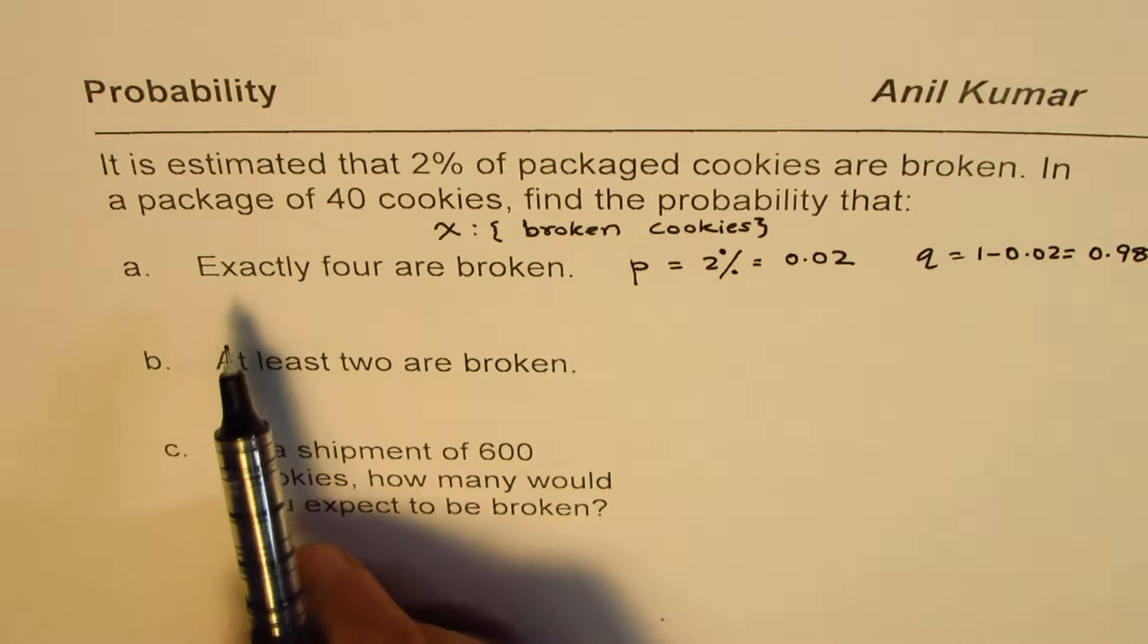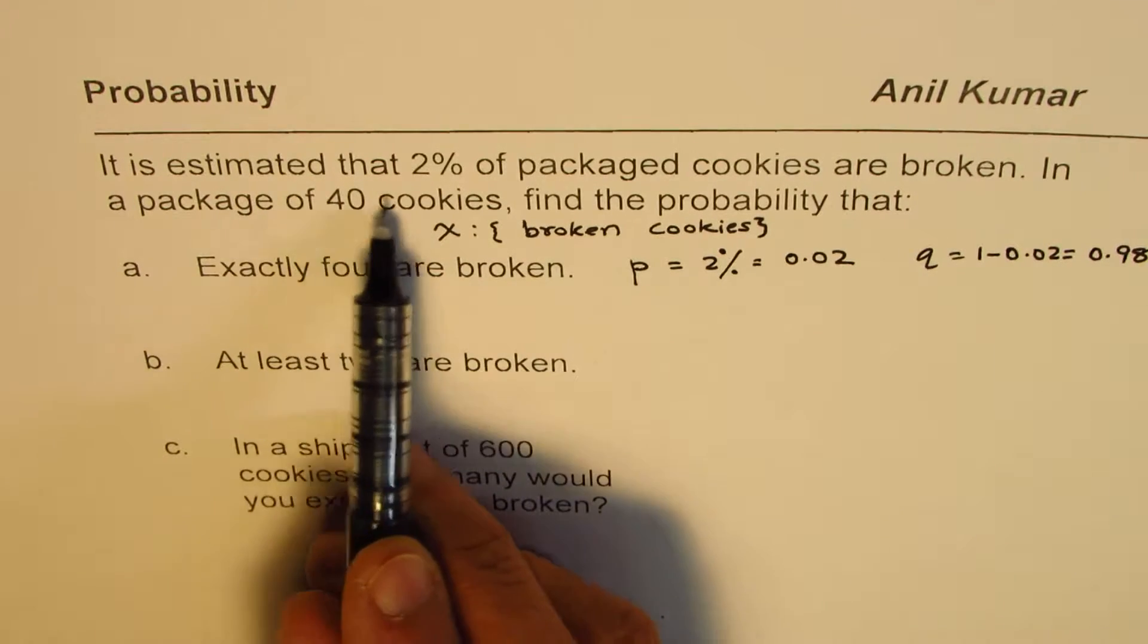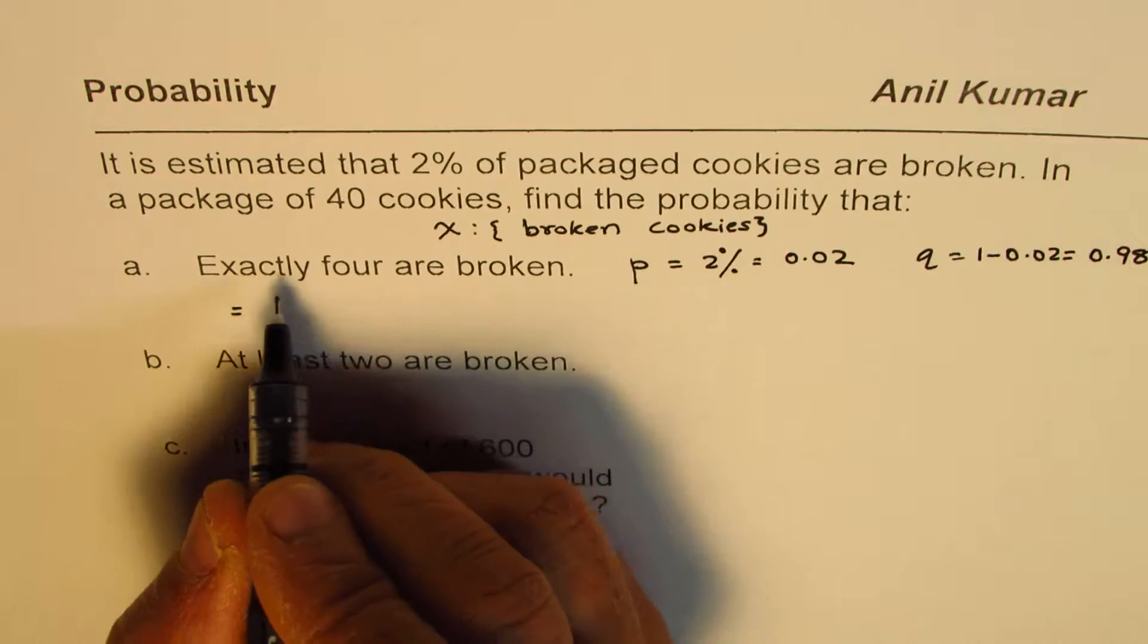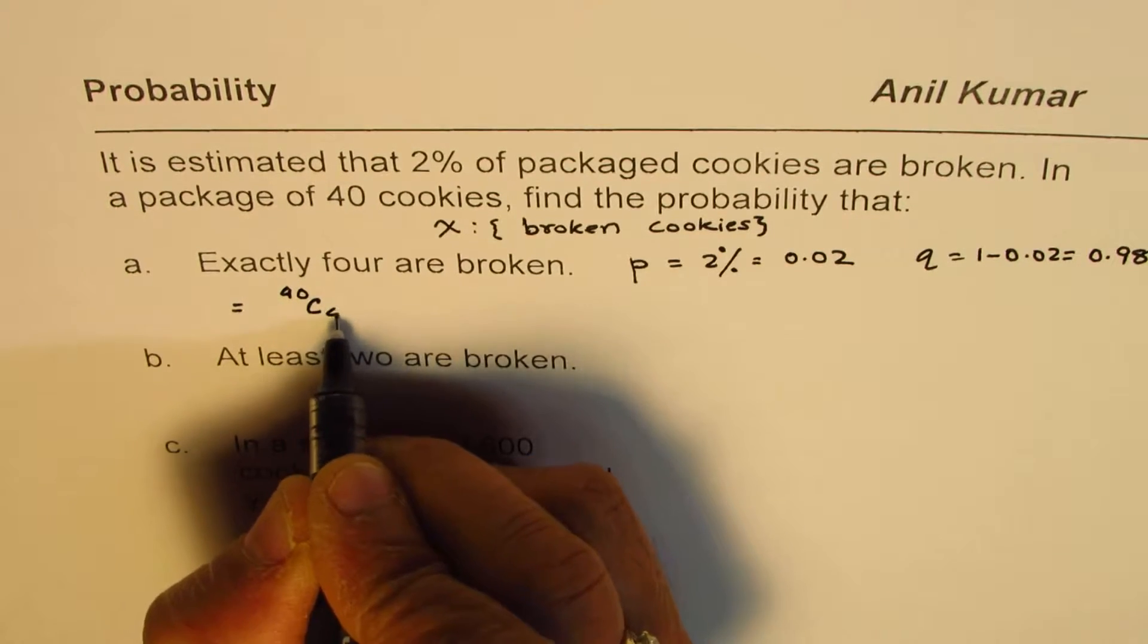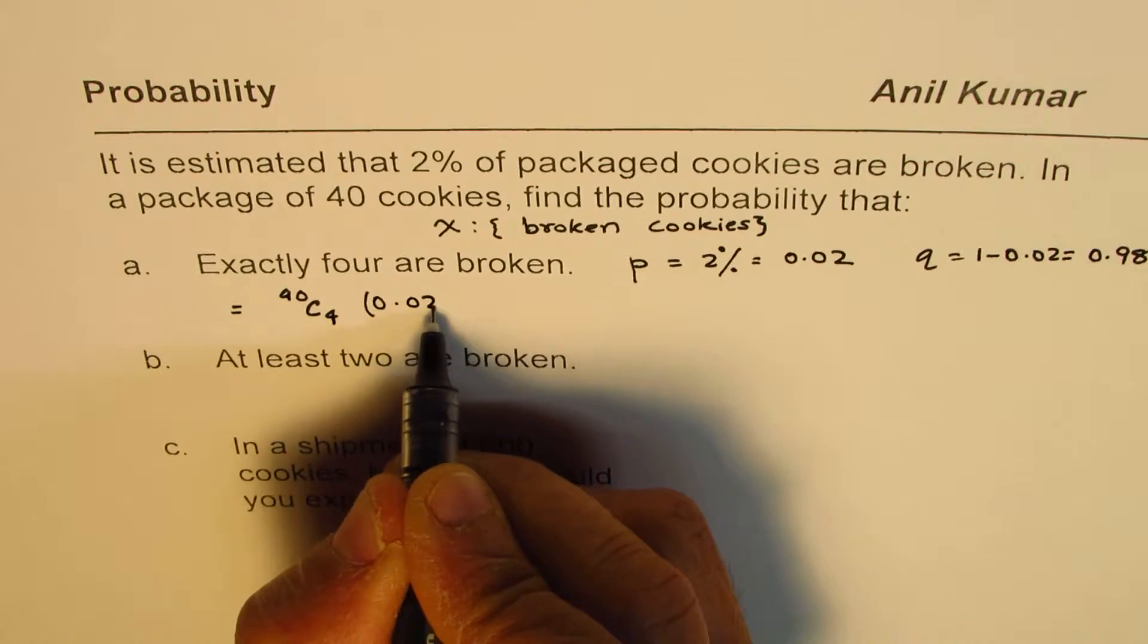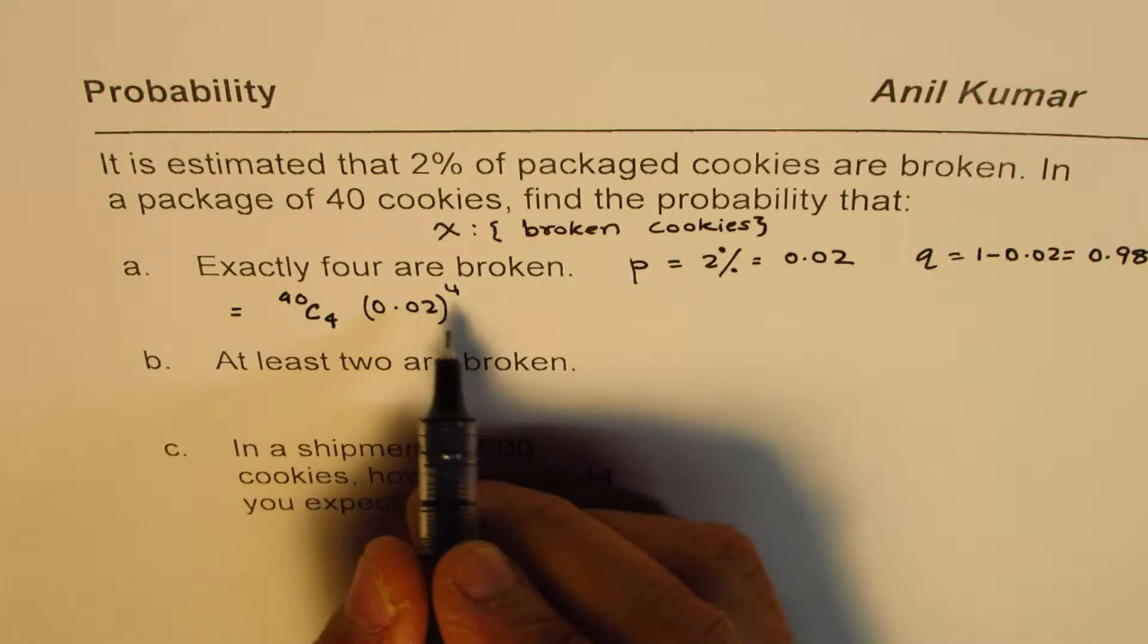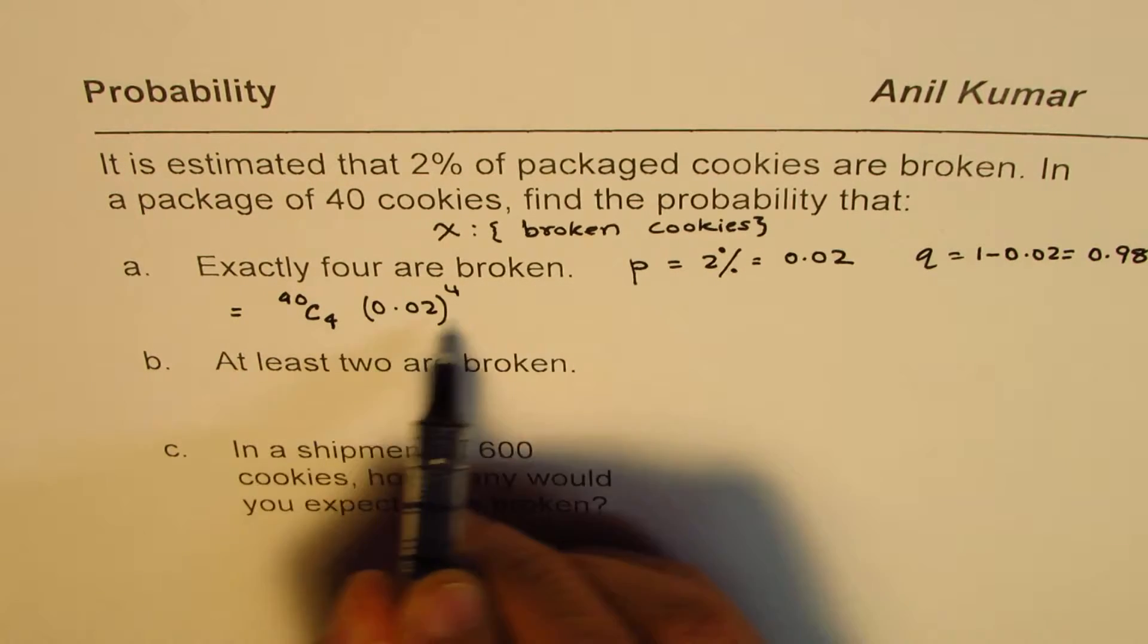When we say exactly 4 are broken, that means out of 40, 4 are broken. Therefore, this is going to be equal to: out of 40, 4 broken pieces which have a probability of 0.02. So that is the broken pieces, 4 of them. These are independent events, and therefore they get multiplied. With two possible outcomes, broken or not broken, it is binomial distribution.